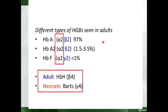Here you can see the different types of hemoglobin found in adults. Hemoglobin A contains 2 alpha and 2 beta chains. Hemoglobin A2 contains 2 alpha and 2 delta chains. Hemoglobin F contains 2 alpha and 2 gamma chains. Adult hemoglobin H contains all beta chains, and Bart hemoglobin contains 4 gamma chains with no alpha chains present.